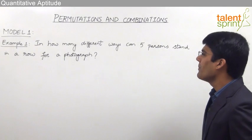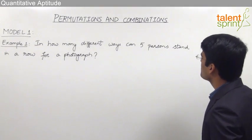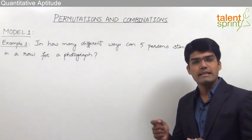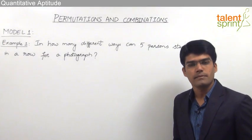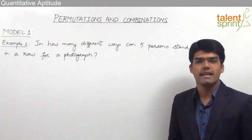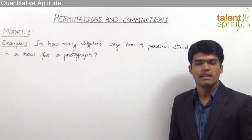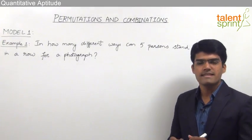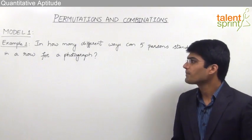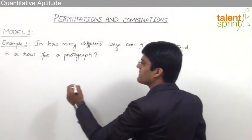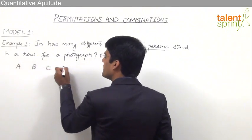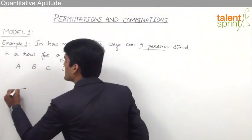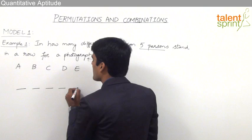The first example here is: in how many different ways can 5 persons stand in a row for a photograph? Before solving any question we first need to decide if it is a permutation or a combination question, and that can be done by checking whether the order or sequence is important or not. Now there are 5 persons A, B, C, D and E, and these 5 persons have to stand in a row with 5 positions: 1, 2, 3, 4 and 5.